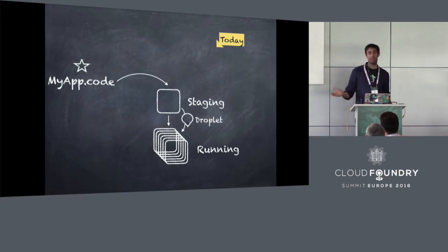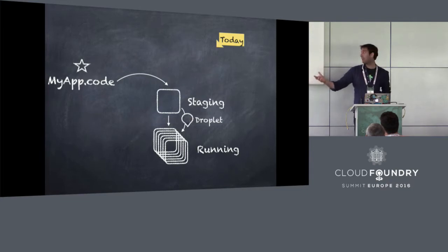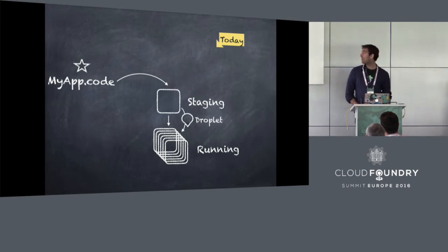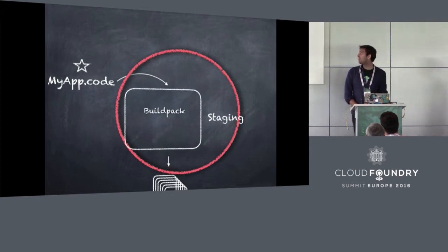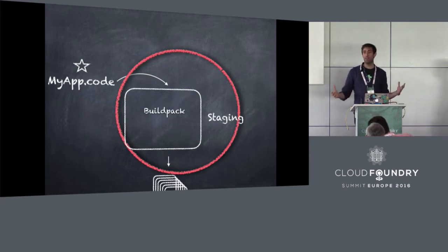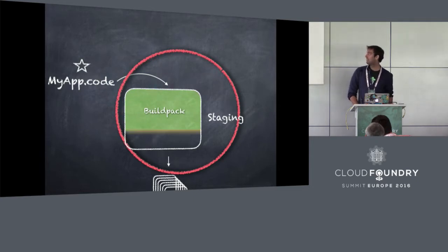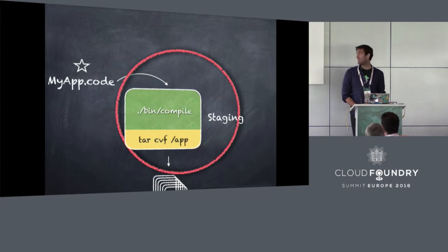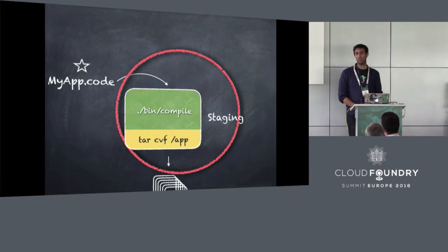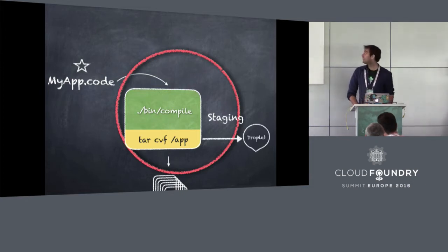Today you might be familiar with the current flow. You've got your code, you push it - this is the part we call staging - you run a buildpack that converts your code to something that can run. We store that as an object called a droplet and we run it. The buildpack is pretty great; we've got this huge library of different ways of converting your code into a running thing. The problem is actually not the buildpack bit - the problem is this bit at the end where we dropletize it, which means we tar up a directory called slash app.